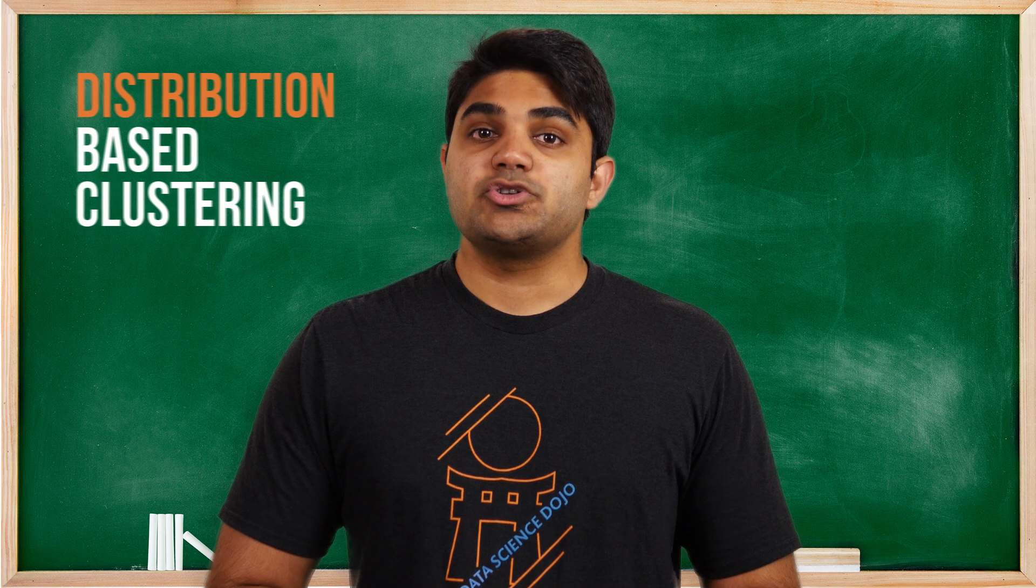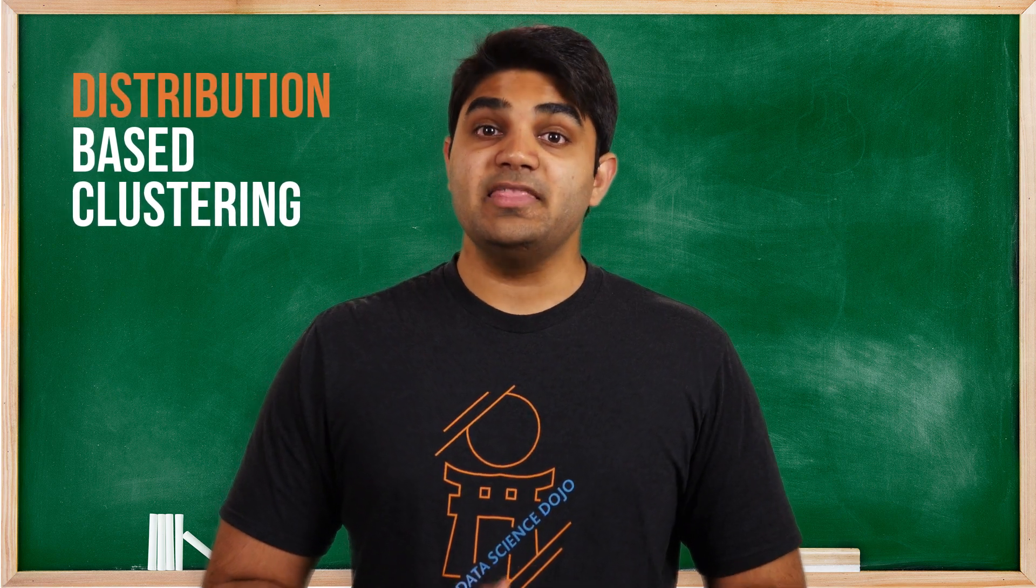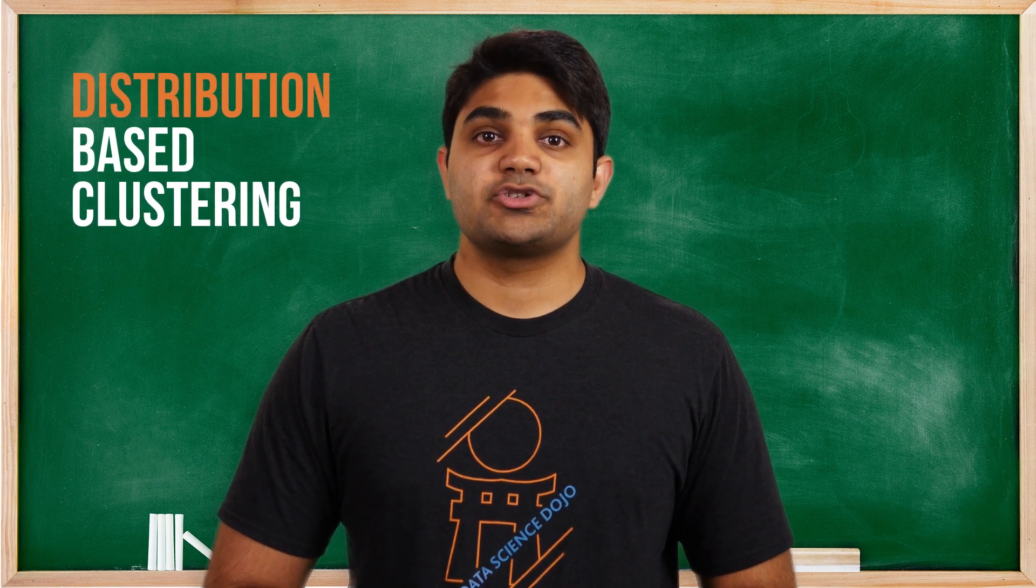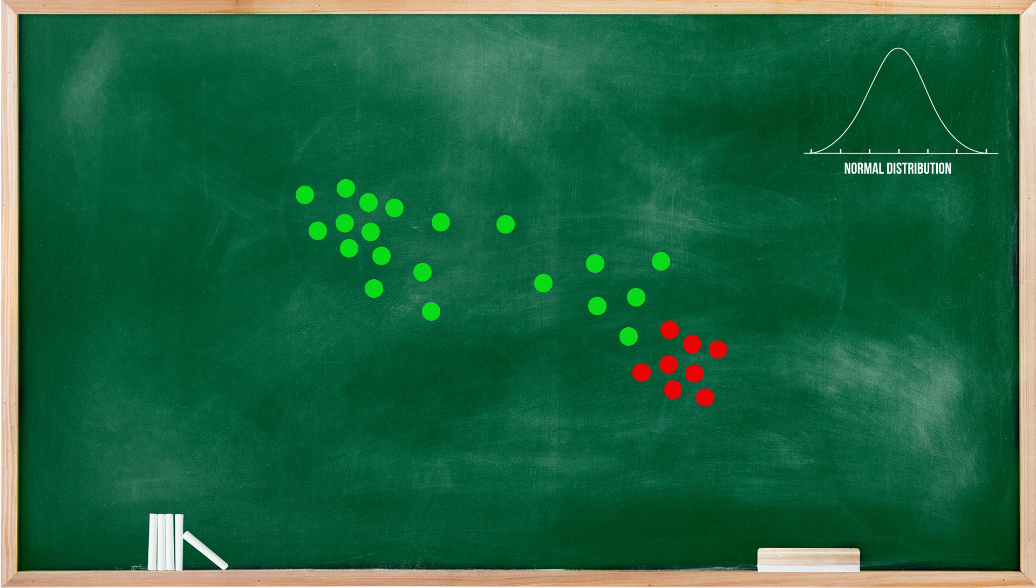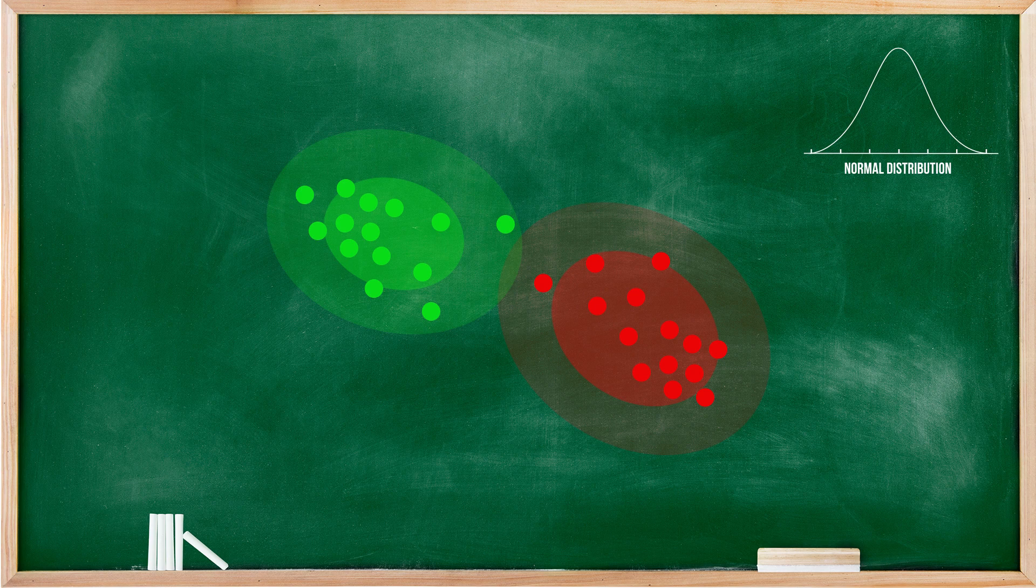The third one is distribution-based clustering. In this method, each cluster belongs to a normal distribution. The idea is that data points are divided based on probability of belonging to the same normal distribution. It is similar to centroid-based clustering, except that distribution-based clustering uses probability to compute the clusters rather than using the mean.